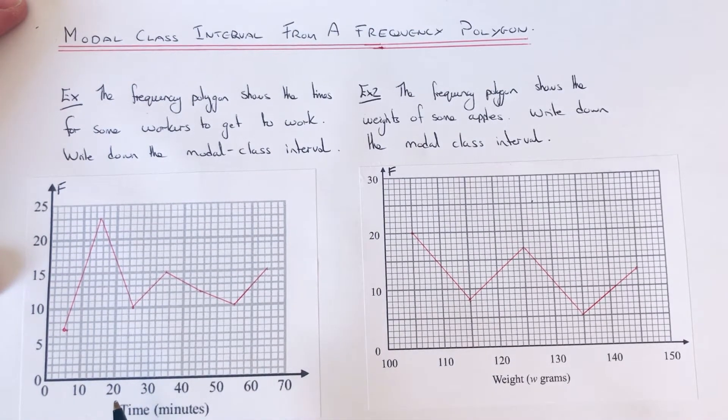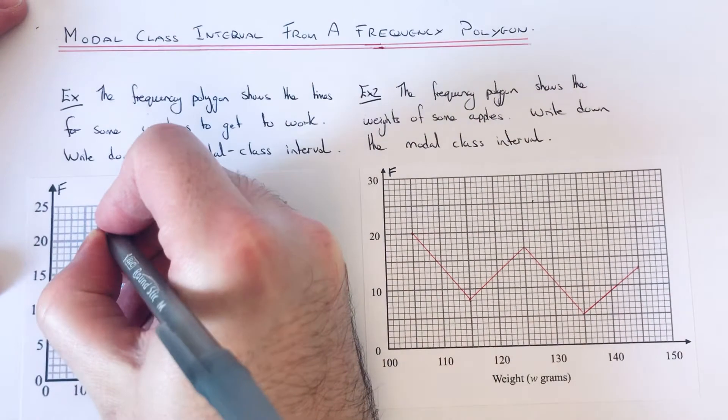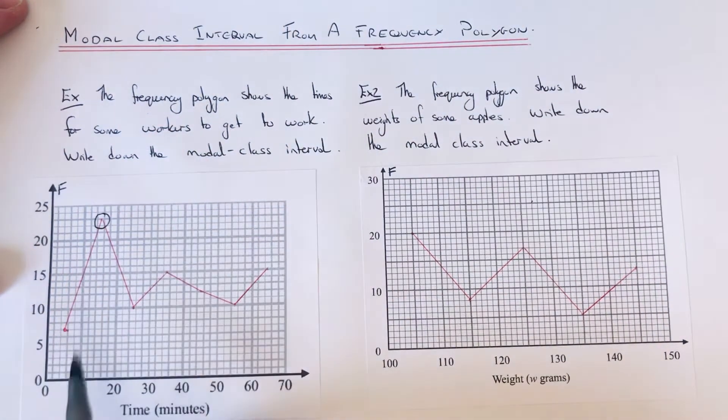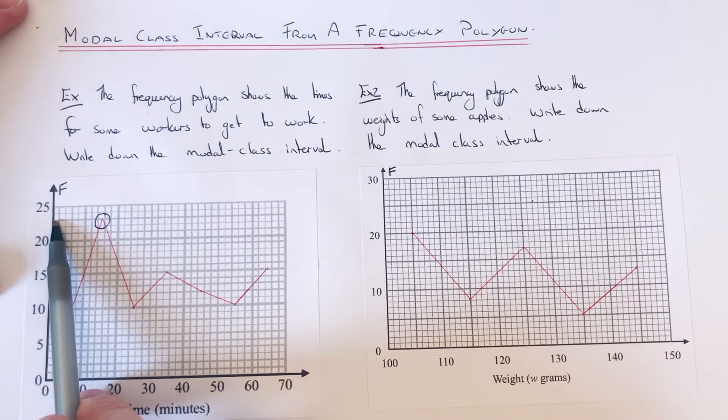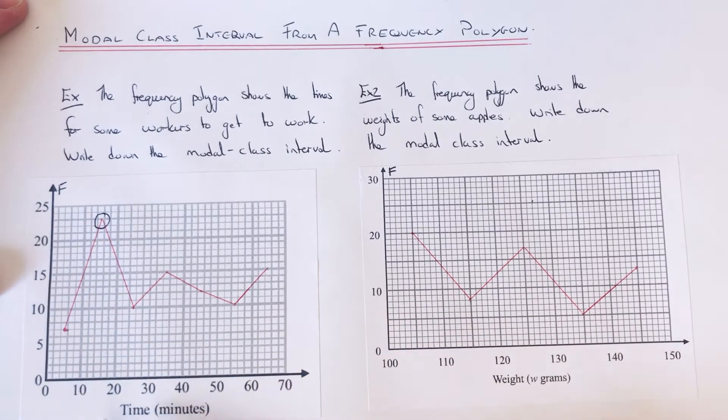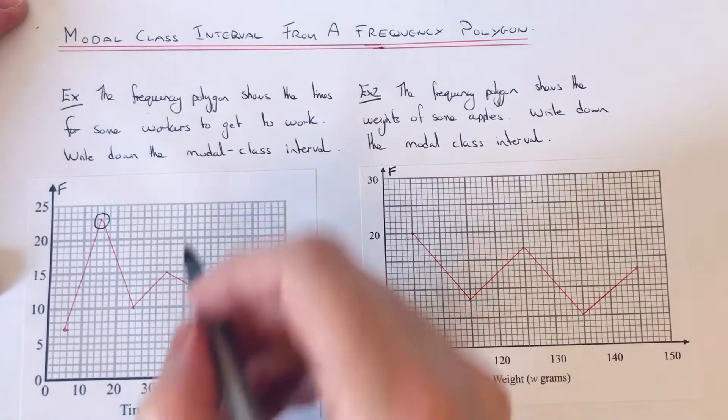Which is this point here. You can see on this one the point has a frequency of 23, so it's in the group 10 to 20. So we can write the modal class interval down.